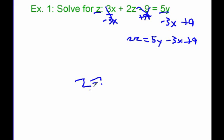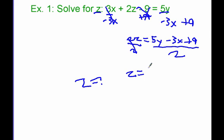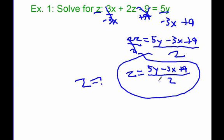Now I'm not quite done yet, because right now I have 2z and I really just want 1z. So I divide both sides by 2 — these cancel and I get z by itself. Now I look at the three terms 5y, negative 3x, and positive 9, and ask myself: can I divide any of these by 2? Since 5, negative 3, and 9 divided by 2 don't work out to integers, the answer is z equals 5y minus 3x plus 9, all divided by 2. That is the answer — we've solved for z by treating the other variables as constants and solving like any other equation.